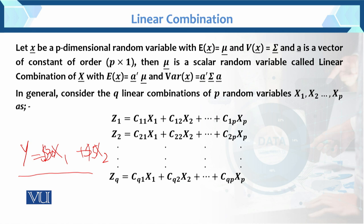The linear combination is the mixture of two or more than two random variables. Basically, linear combination is what we call a transformation — we have transformed our variables x1 and x2 and introduced a new variable y. This is the basic definition.